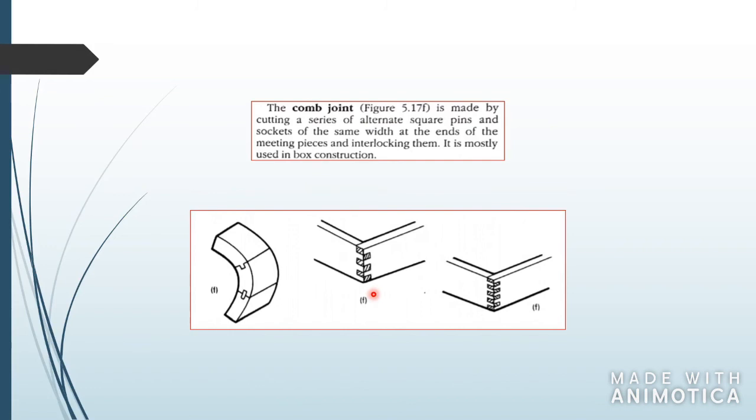Here we have a dovetail joint. The dovetail comes from the shape of the dove's tail. You have different types of joints you can use. This one has the tail exposed at the end. This one has the tail interlocked inside, so on the other side of this board you won't see any of the tails exposed. This one is a mitered joint, so you won't see anything at all - all the dovetails are interlocked inside.